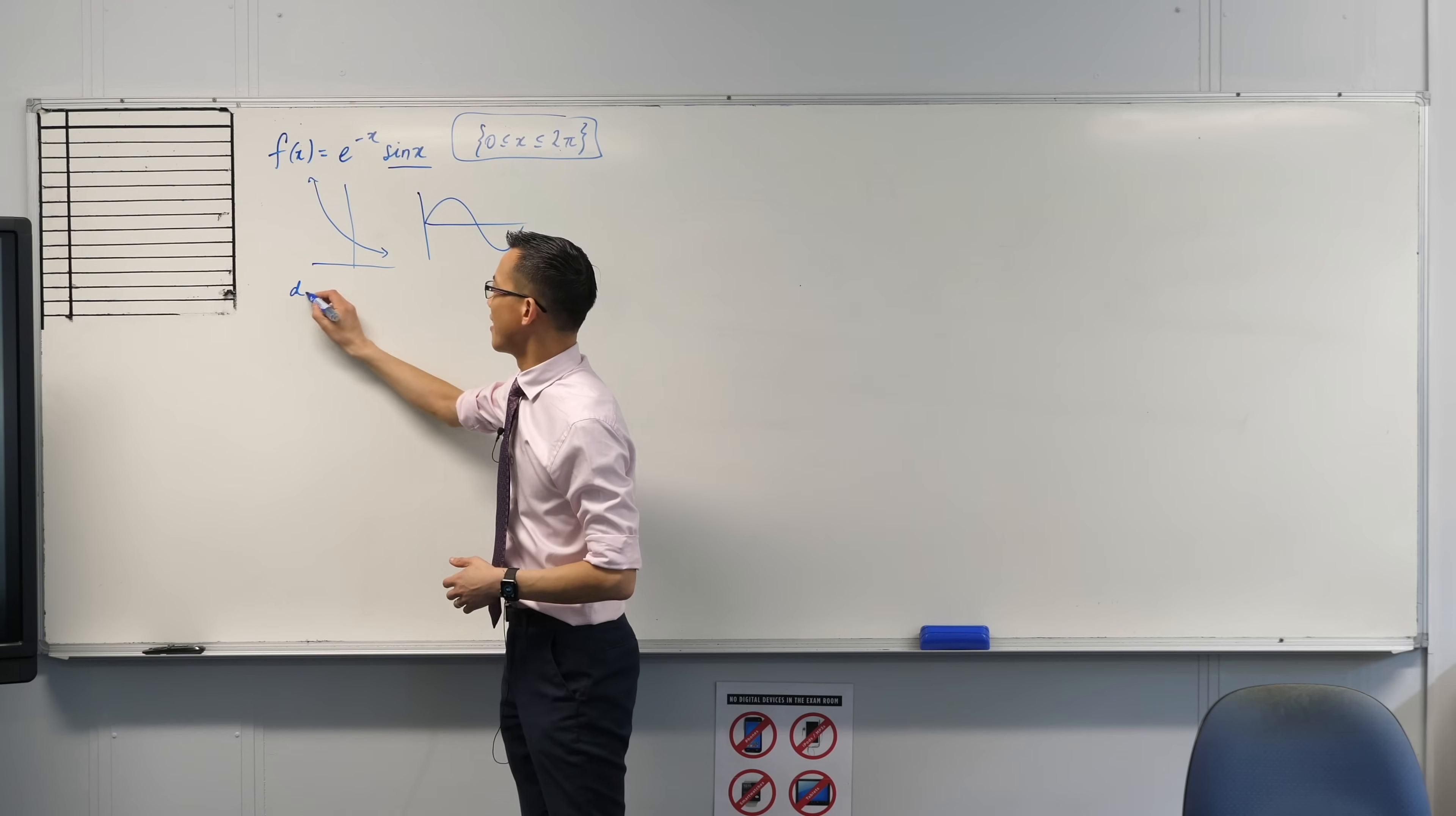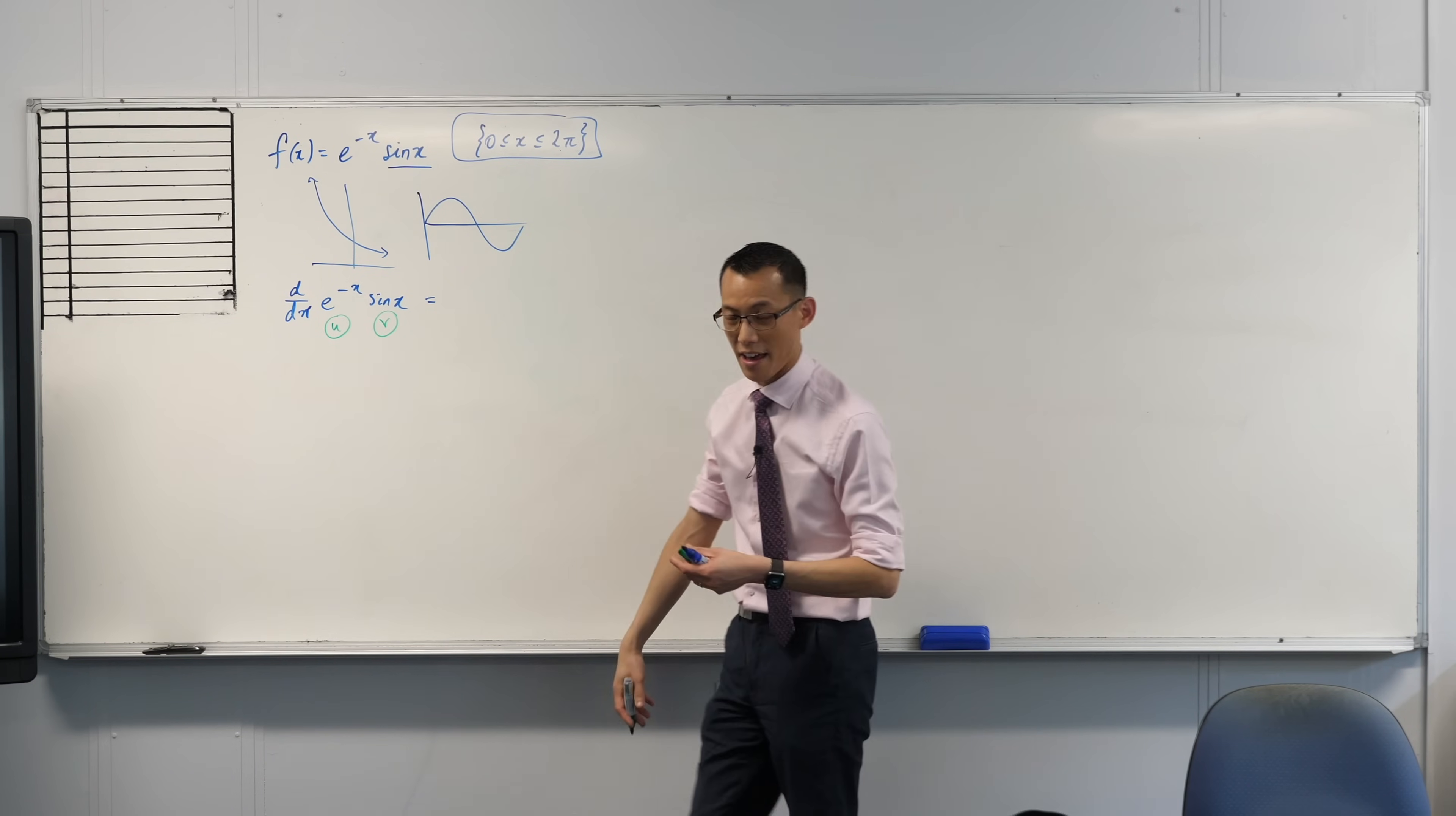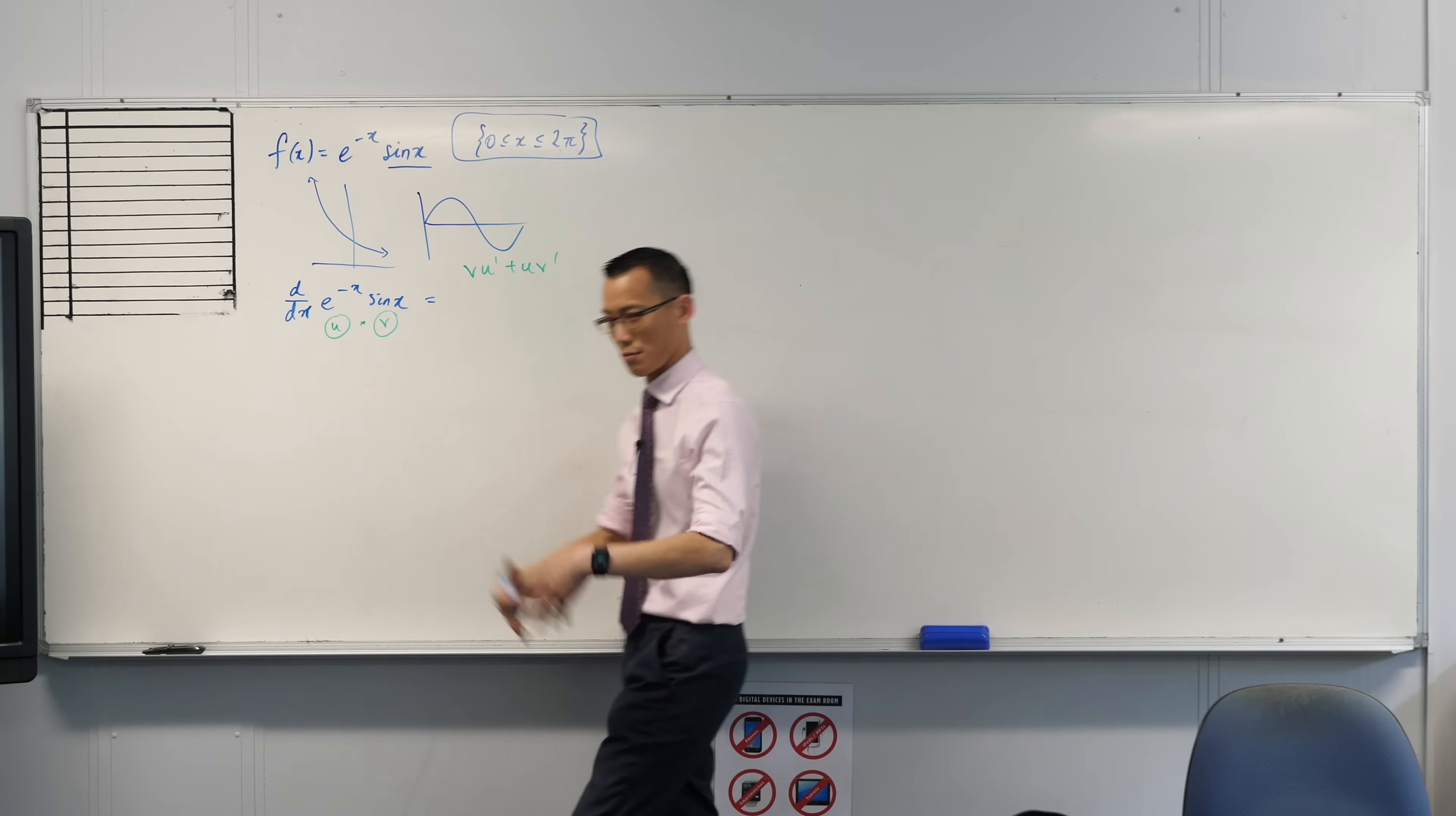So to find stationary points, we need this thing called a derivative. That's taking this function up here and doing something which most students should have found fairly routine. There's two things being mushed together, one being multiplied by another. So it's a product, u times v.